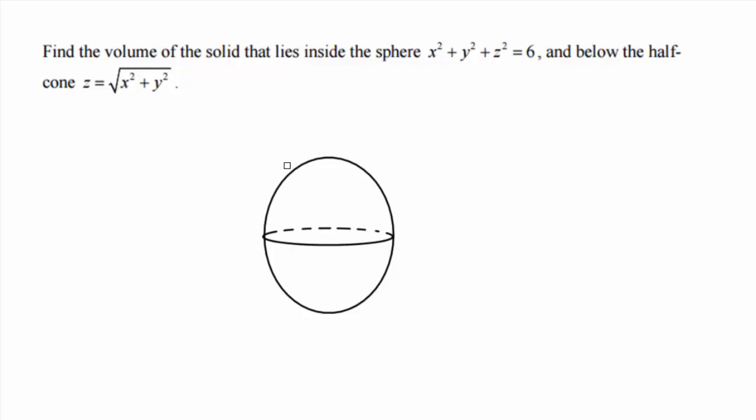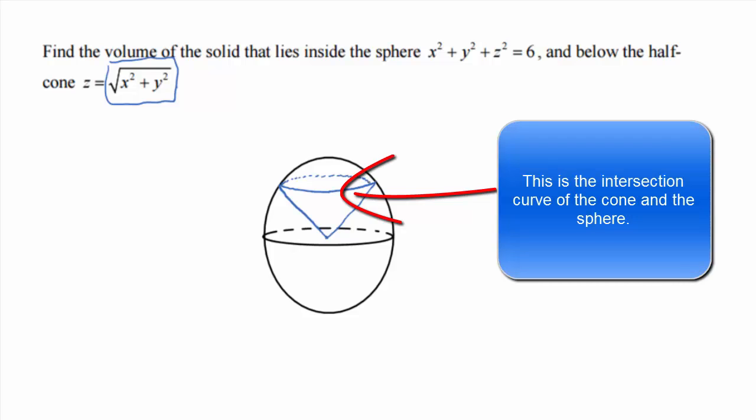There you go. So we'll say that's our sphere of radius root 6, I guess. And then this is the top half of a cone. Its vertex is at (0, 0, 0), so it's got to be in there like that. And then what I'm drawing here would be where the cone intersects the sphere, something like that. Does that make sense?